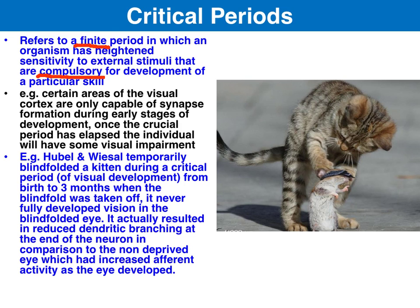This is illustrated by experiments done by Hubel and Wiesel, which temporarily blindfolded one eye of a kitten during the critical period from zero to three months. When the blindfold was taken off, that eye never fully developed vision. It actually resulted in a reduction in dendritic branching at the end of the neuron, and there was less afferent activity in the blindfolded eye.